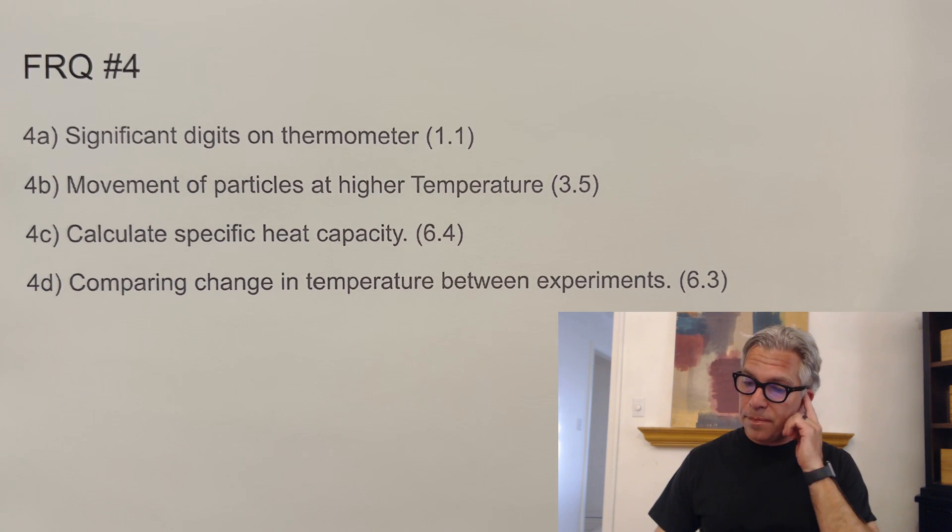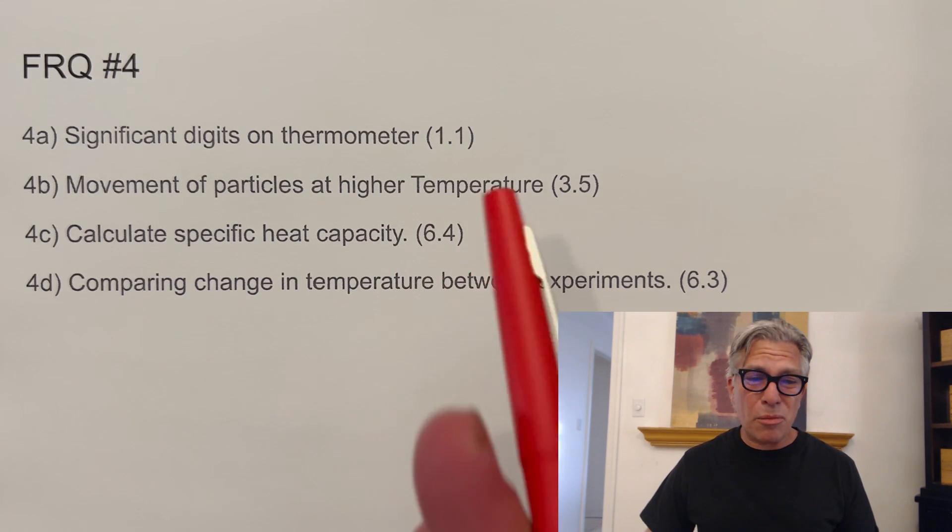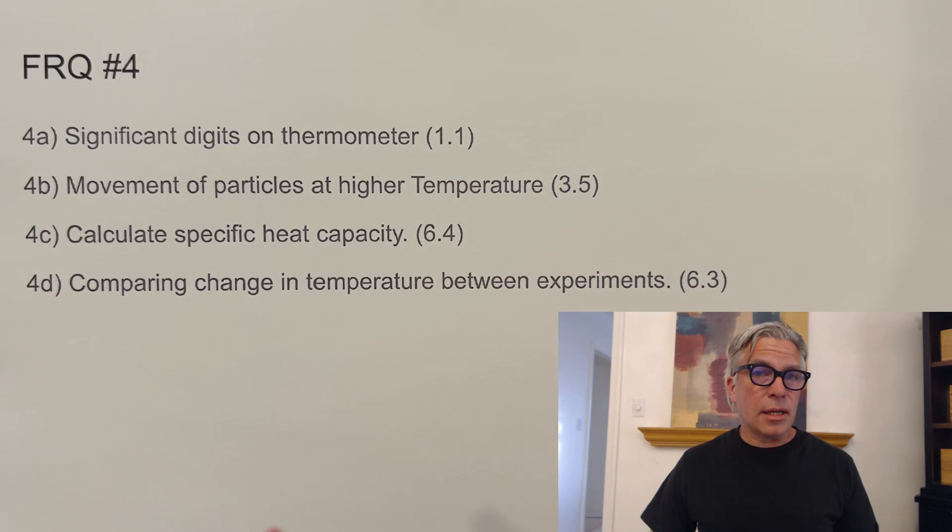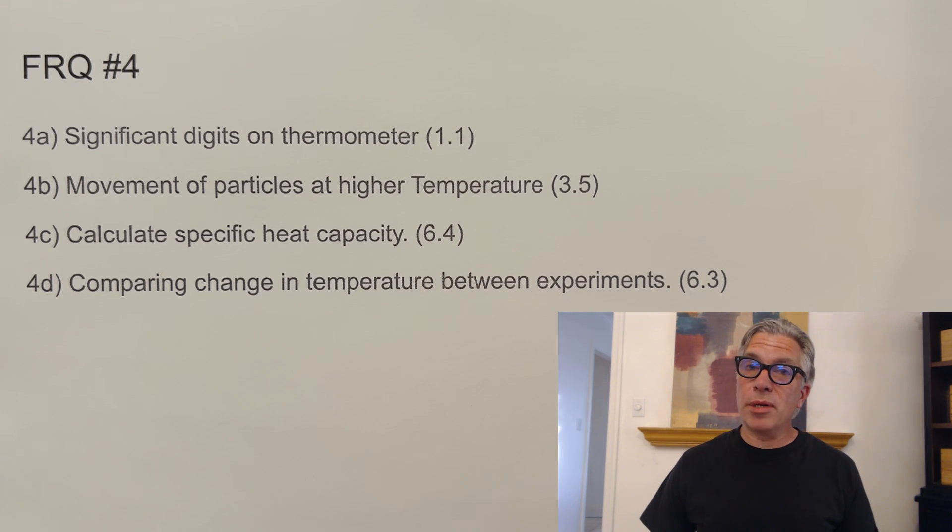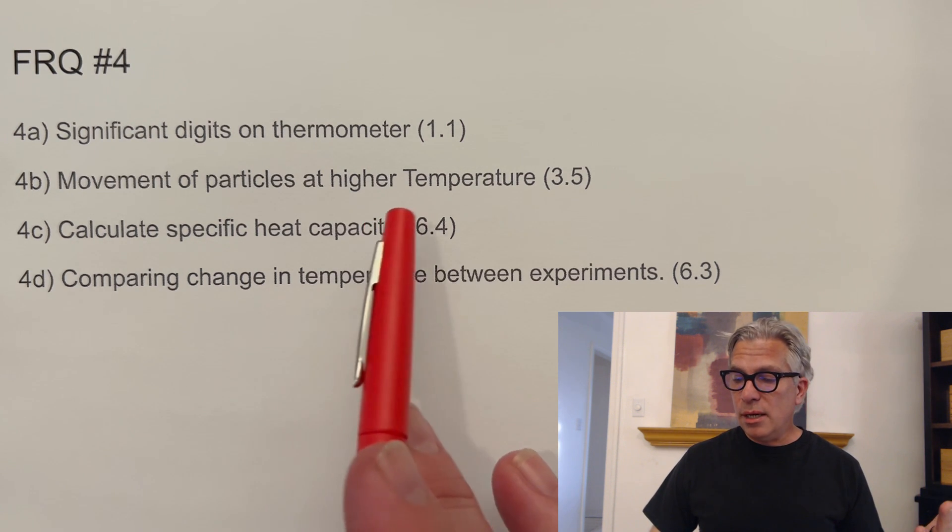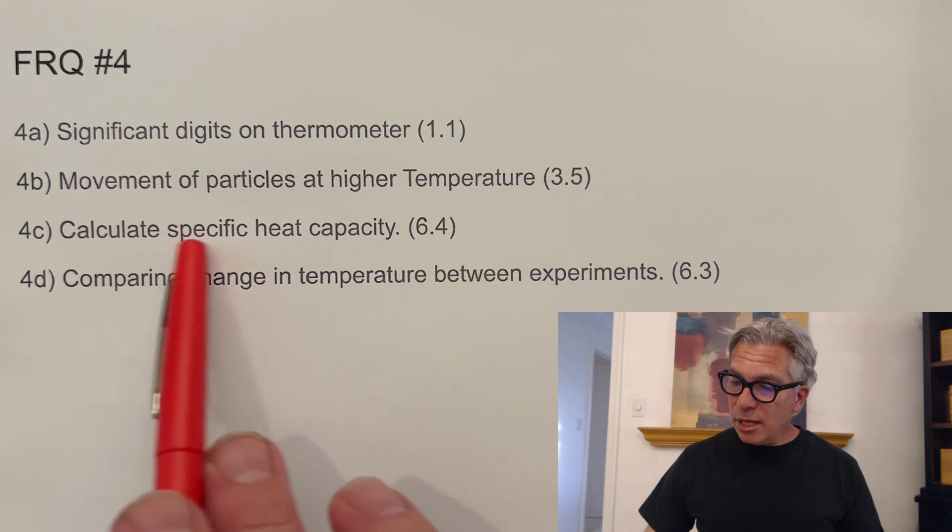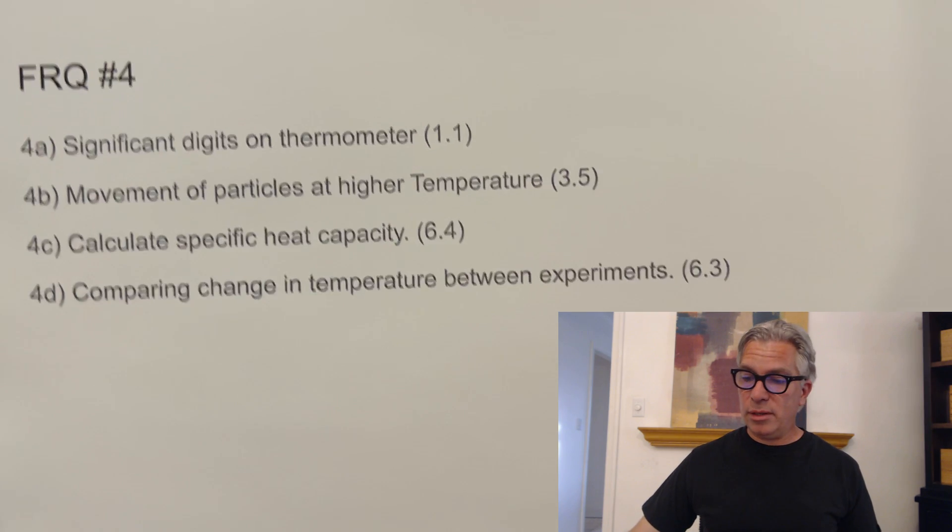And then we get into the short FRQs. Significant digits on the thermometer. That was kind of just like a general laboratory technique type of situation. I assigned it 1.1, even though it's almost like one of those assumed things. When you enter your second year of chemistry and take AP Chem, they're assuming you know how to take measurements on an instrument with the appropriate number of sig digs. So you always want to take whatever digits are given to you by your measurement and add one, which is an estimate. That top of the thermometer was actually between the lines. And so you had to estimate between the lines. So hopefully you did that. I'm sure you did that because you're all awesome. And there you go. Movement of particles at higher temperatures. So you had to draw some arrows to show that it was increasing in temperature and kinetic energy. Those arrows should have been longer, I think. Calculate the specific heat capacity. There's thermo again. Everybody was saying, why is there so much thermo on this exam? Comparing change of temperature between experiments. And I assigned that unit 6.3. So that was FRQ number four.